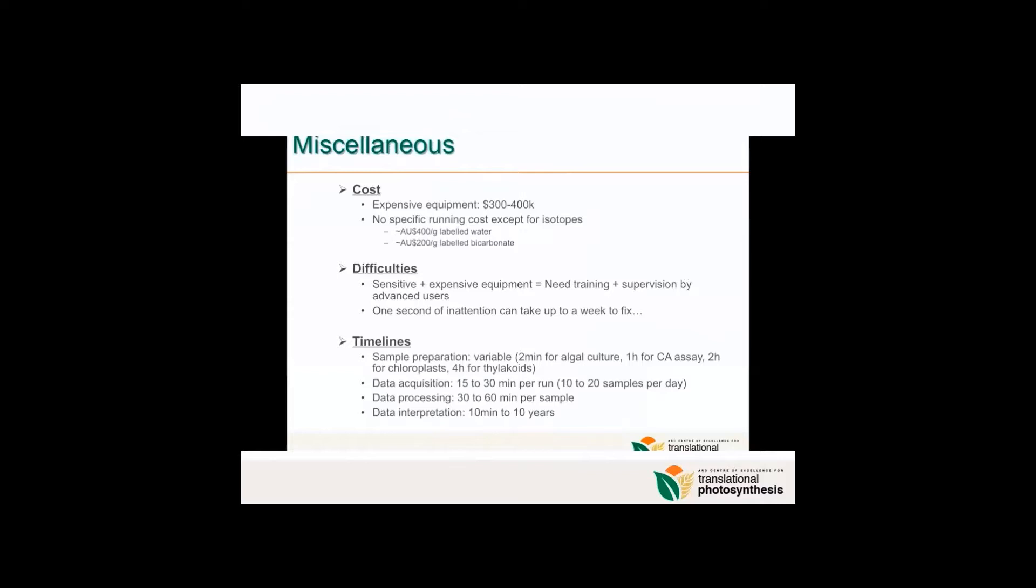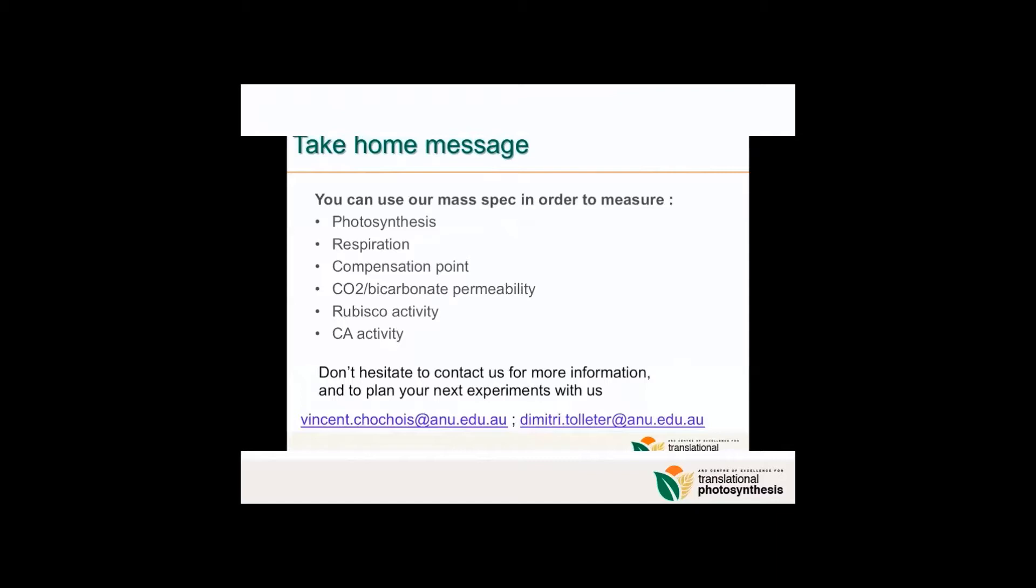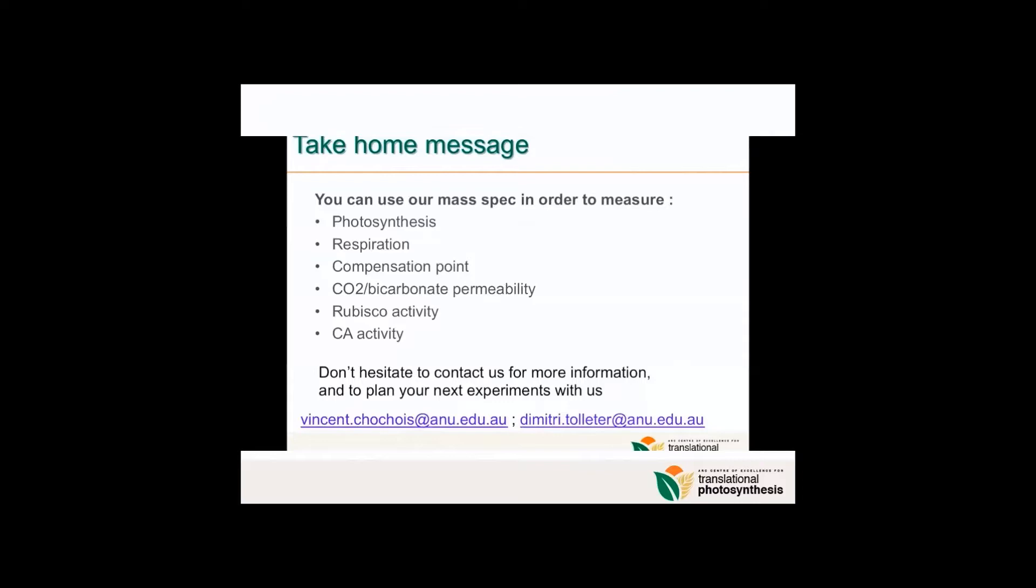By now you know almost everything about the mass spec. We can give you some information about the cost. It's a very expensive equipment, around $300,000 to $400,000. They have no specific running cost except for isotopes. For difficulties, it's an instrument quite sensitive and expensive, so it needs training and supervision by advanced users. Once it goes into tension, it can take up to a week to fix. For timeline, sample preparation is very variable, from two minutes for an algal culture to four hours.